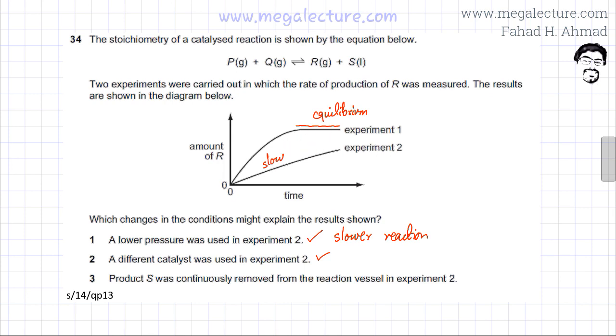And option three is that product S was continuously removed from the reaction vessel in experiment two. So if you continuously remove product S, and remember, we're talking about the amount of R that's being produced. So if you constantly remove product S, the rate of forward reaction, there would be no change in the rate of forward reaction because the rate of the forward reaction depends on the collisions that are occurring between P and Q.